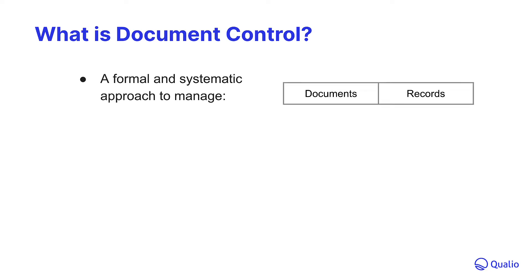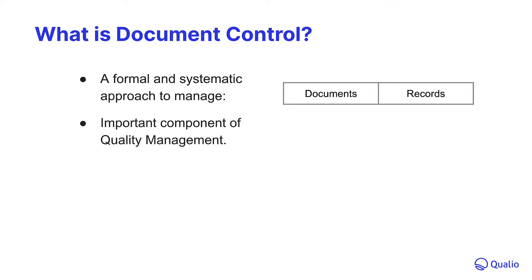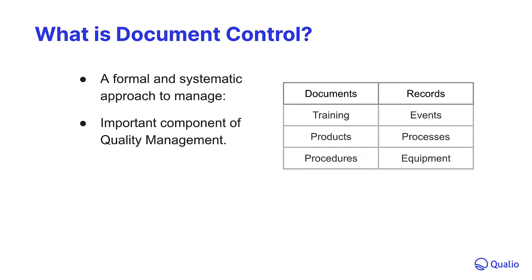The term managing encompasses creation and update. Document control is just one component of quality management, an umbrella term that links documents and records to training, events, products, processes, procedures, and equipment. There are a lot of interdependencies here, and that's where Qualio can help you keep track of it all.